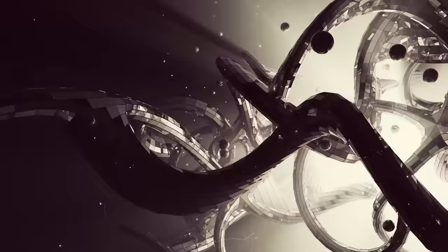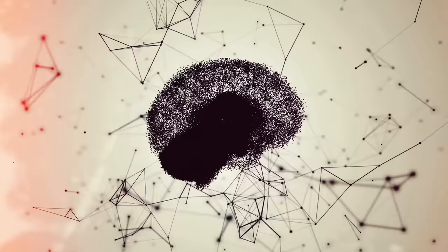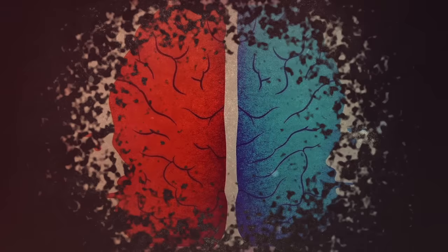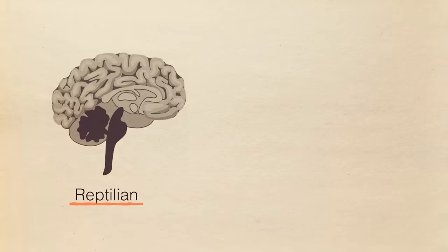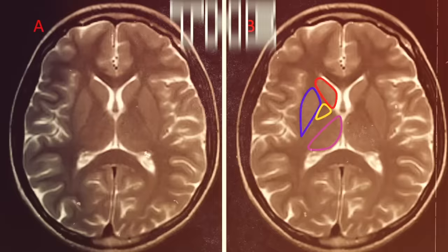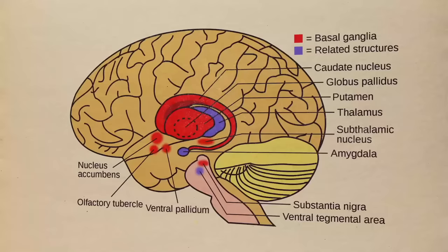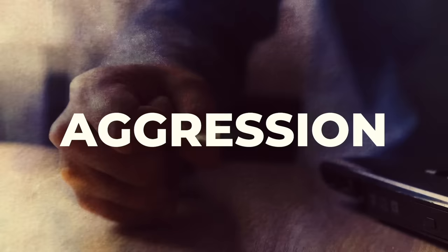The brain, often called the body's command center, is a marvel of evolutionary development. To truly grasp its complexity, one must understand the dual dimensions that govern its function: the reptilian brain and the neocortex. The reptilian brain, or the basal ganglia, is the oldest part of the brain in terms of our evolutionary history. It can be found in the brain's core, and is responsible for primitive survival instincts.